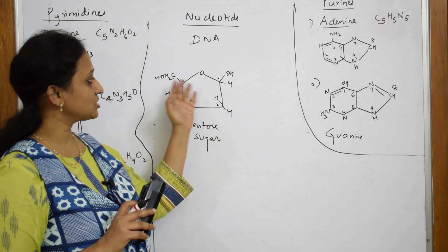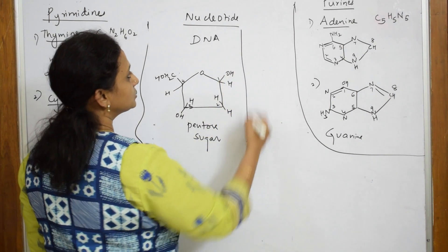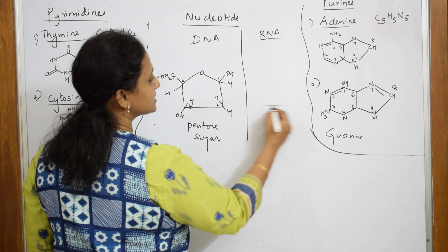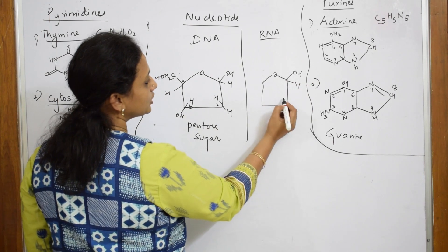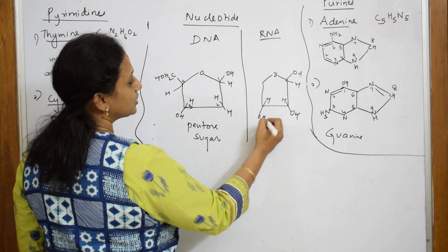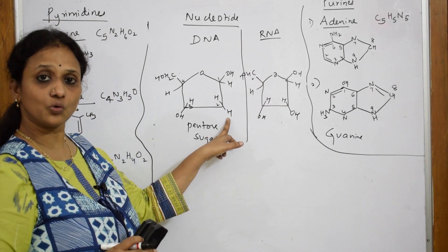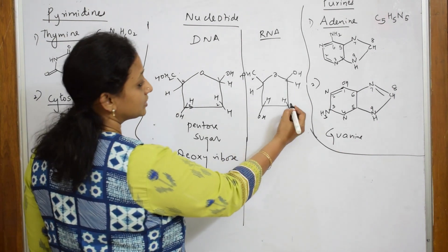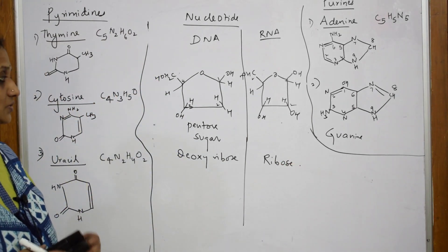In ribose, the structure is the same but the only difference is in the second carbon you have OH instead of H. So in RNA, the structure looks exactly the same except at the second carbon you have H and OH — that is ribose. In deoxyribose there is no oxygen at the second carbon, which is why it is called deoxyribose. But in ribose there is oxygen at the second carbon.